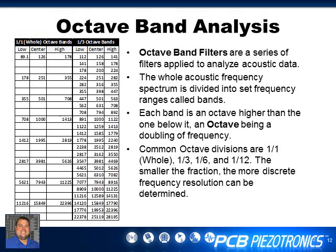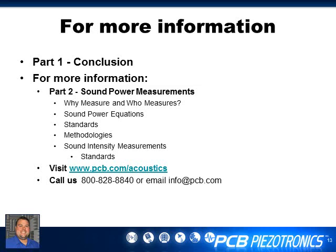Now I'm going to talk about octave band analysis. Some of you may be familiar with frequency responses in FFTs — that's linear or constant frequency with bins. Octave band analysis derives from the fact that an octave is a doubling of frequency. Whole octaves are too big for true analysis, so we divide into 1/3, 1/6, or 1/12 octaves. The smaller the fraction, the smaller the range per bin and the more bins you have over the entire frequency range. Human acoustics ranges from 20 Hz to 20 kHz, and you see the list of octave band bins here going all the way up to 22 kHz.